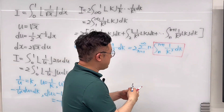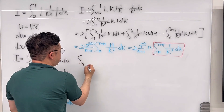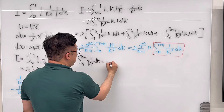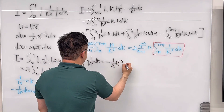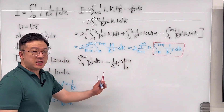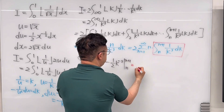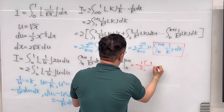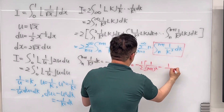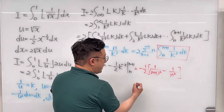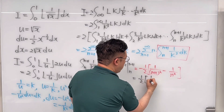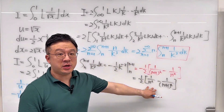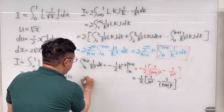So we evaluate this inner integral: the integral from n to n plus 1 of 1 over k cubed dk. This equals negative 1 over 2 times k to the power of negative 2, evaluated from n to n plus 1. Working this out, it equals negative 1 over 2 times the bracket 1 over (n+1) squared minus 1 over n squared, which simplifies to positive 1 over 2 times the bracket 1 over n squared minus 1 over (n+1) squared.